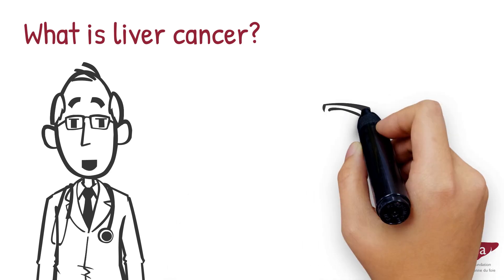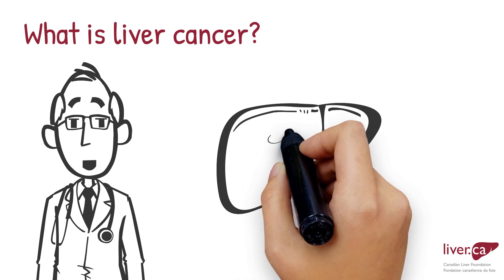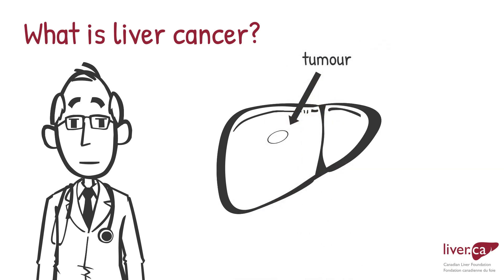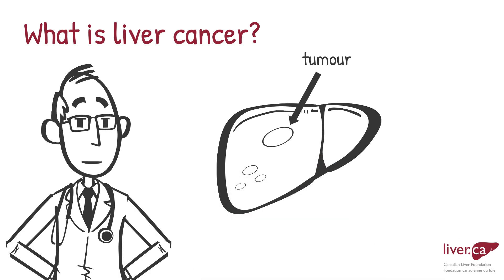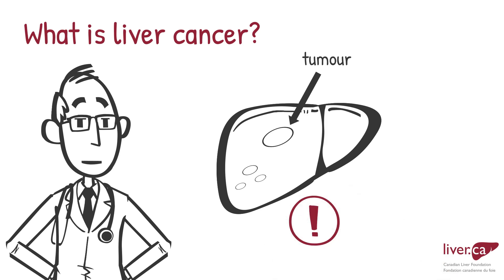Liver cancer usually starts out as a small lump, called a tumor, and can grow larger or can develop in more than one site in the liver over time. It usually starts slowly in the liver that has been exposed to certain risk factors for liver cancer.